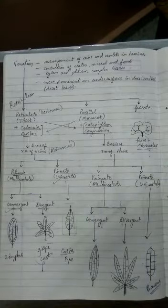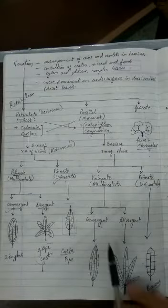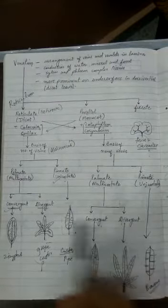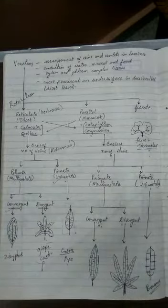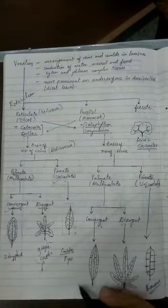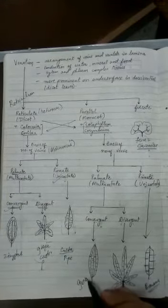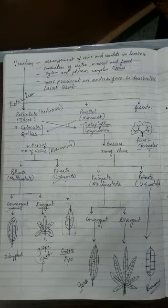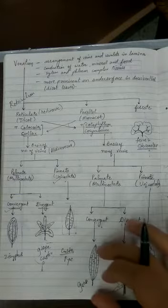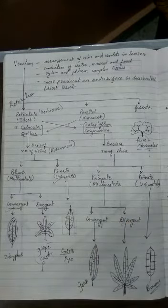When we talk about the palmate venation, palmate or multicostate parallel venation is again of two types, convergent and divergent. Remember, palmate will always have two types, convergent and divergent. This is found in grasses or you can say bamboo or the wheat plant, maize plant, rice plant, sugarcane, Saccharum officinarum. In all these plants, you will find this type of venation is there.